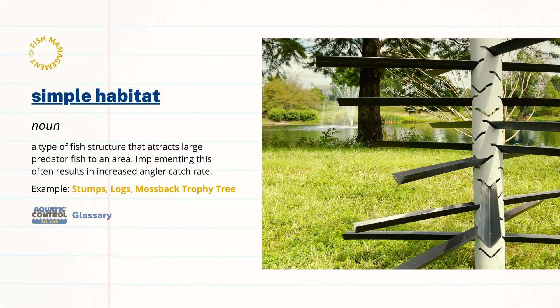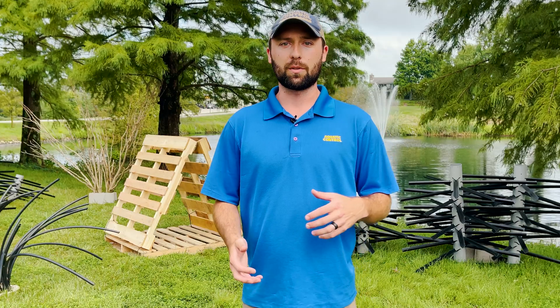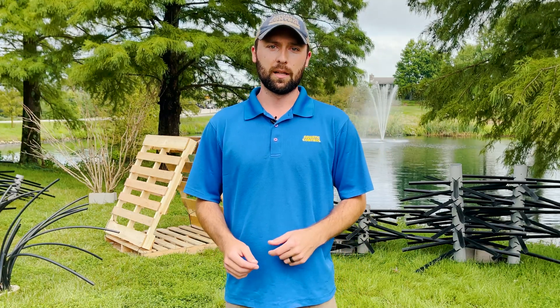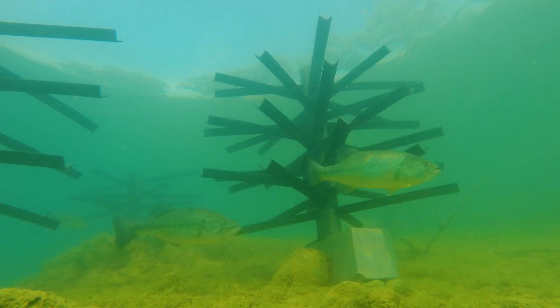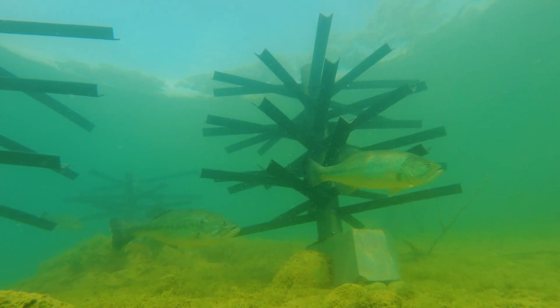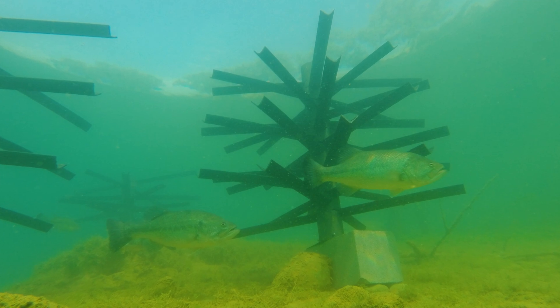First up, we're going to talk about simple habitat. This is going to be great for attracting fish to a specific area. It's going to attract adult bluegill, largemouth bass, crappie, any of your common game species. They're going to like to hang around this at different times of the year, but this is really going to allow anglers to increase their catch rate while they're fishing. This habitat may change the way that you fish your pond, but it's rarely going to change the trajectory of your fishery.